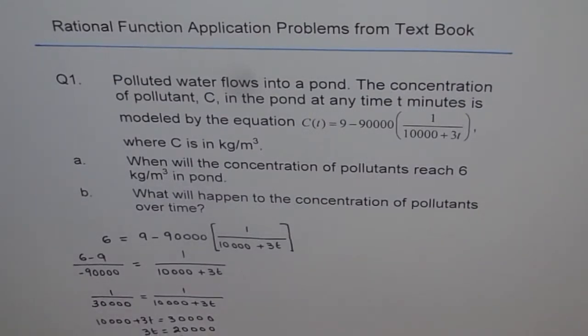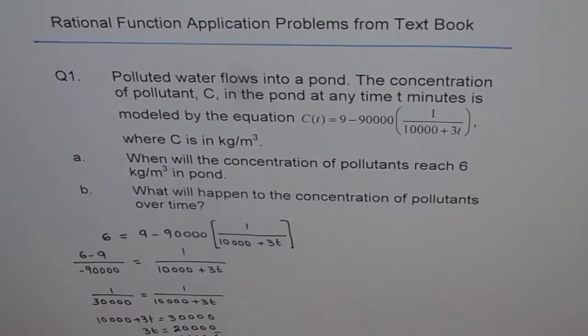And from here we can calculate t equals 20,000 divided by 3, which is 6,666.6. So that is the time which we get in minutes. So that is the answer in minutes. After this much time the concentration will be 6.